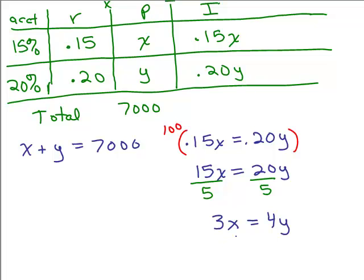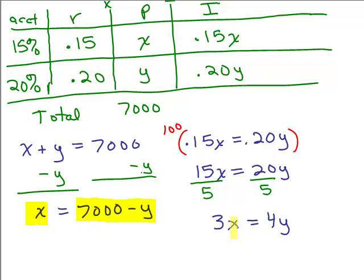So how about using substitution? Because it's easy to solve for X or Y over here on the left-hand side, and then we could plug that in to this equation 3X equals 4Y. We'll plug either something in for X or we'll plug in something for Y. It doesn't matter. Let's go ahead and solve for X in this equation. You want to do it in the equation that's easy to solve for. So if I subtract Y from both sides, that says X is 7,000 minus Y.